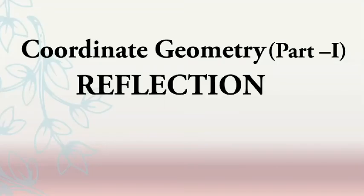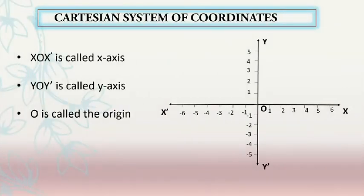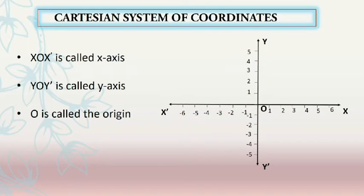Let us recall the concept of the Cartesian System of Coordinates. A Cartesian coordinate system, or coordinate plane, consists of two numbered lines placed perpendicular to each other. The line XOX' and the line YOY' together form a coordinate plane. The horizontal line XOX' is called the X-axis, the vertical line YOY' is called the Y-axis, and the point of intersection of the X-axis and Y-axis is called the origin, represented by the point O.